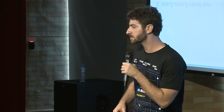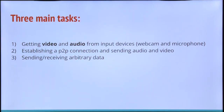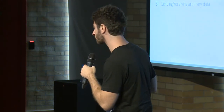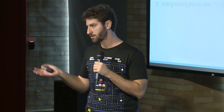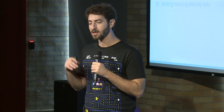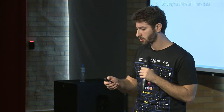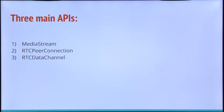WebRTC has three main tasks. The first one is getting the video and the audio from the input devices, such as your webcam or your microphone. Secondly, establishing a peer-to-peer connection between peers, and the ability to send video and audio. And third, the ability to send arbitrary data. For each one of these tasks we have one API: the first one is MediaStream, the second is RTCPeerConnection, and the third is RTCDataChannel.